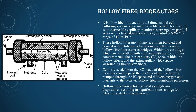The hollow fiber bioreactor consists of mid-in and mid-out harvesting ports, nutrition, cells, and metabolic waste products. A hollow fiber bioreactor is a three-dimensional cell culturing system based on hollow fibers, which are small semi-permeable capillary membranes arranged in a parallel array, typically with a molecular weight cutoff range of 10 to 30 kDa.